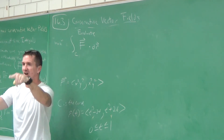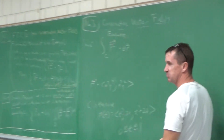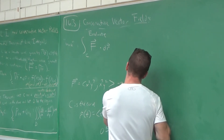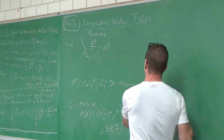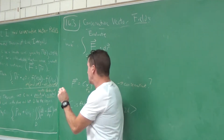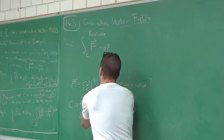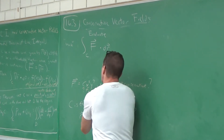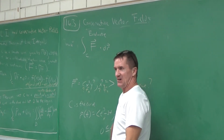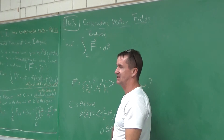Is this vector field conservative? If it is, this is all we have to do — apply the fundamental theorem. So let's explore: is the vector field F equals x squared y cubed i plus x cubed y squared j conservative? This is possibly fx and possibly fy of some potential function. We need fxy to equal fyx. If true, it'll be easy. If not, we've got a tough integral.